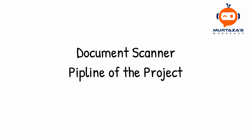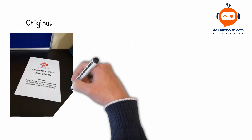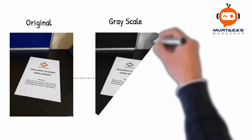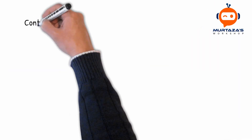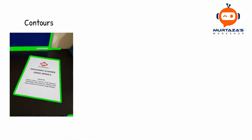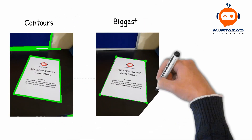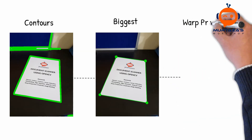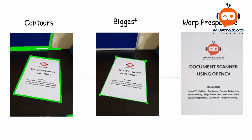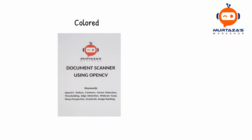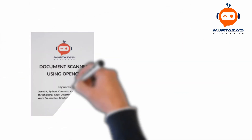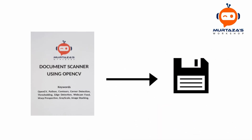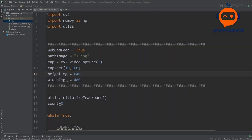Before we begin, let's have a look at the pipeline of the project. First we are going to get our image from the webcam, then we will convert it into grayscale and apply an edge detector to find edges. Next we will find all the contours present in the image, and from this we will filter and get the biggest contour. With the corner points of the biggest contour we will use warp perspective to get the desired image. Later we will apply adaptive thresholding to get the scanned paper feel, and lastly we will add the functionality of saving the image to a folder.